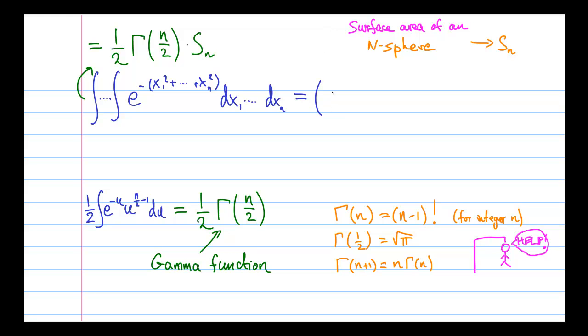And remember that our original expression was taking the Gaussian integral and taking it to the power of n. But we already know the answer to that. That's going to be the square root of pi to the power of n.